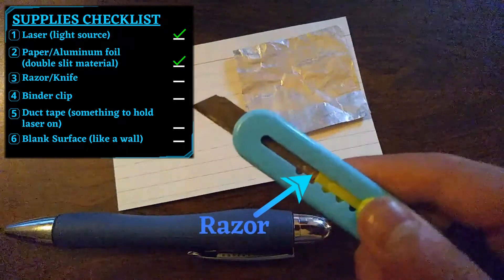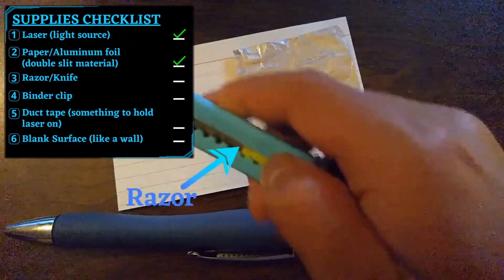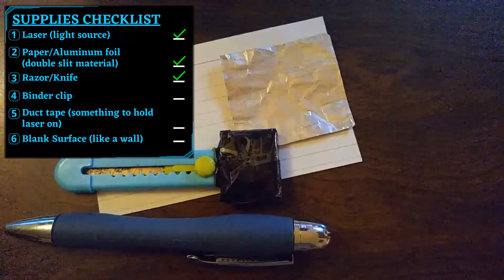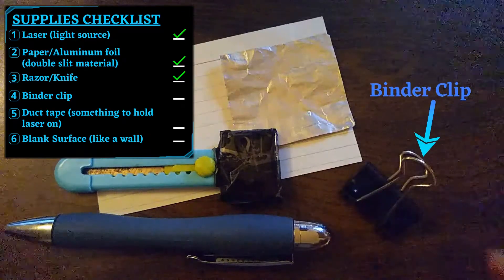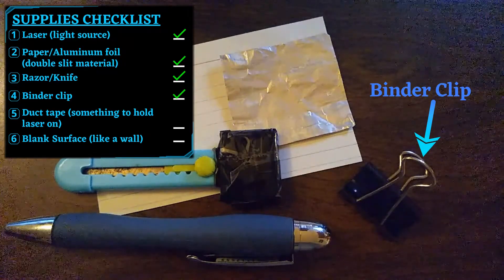Third, a razor or knife to cut the very small slits. Fourth, a binder clip like this, which I found was an easy way to hold up the double slit.